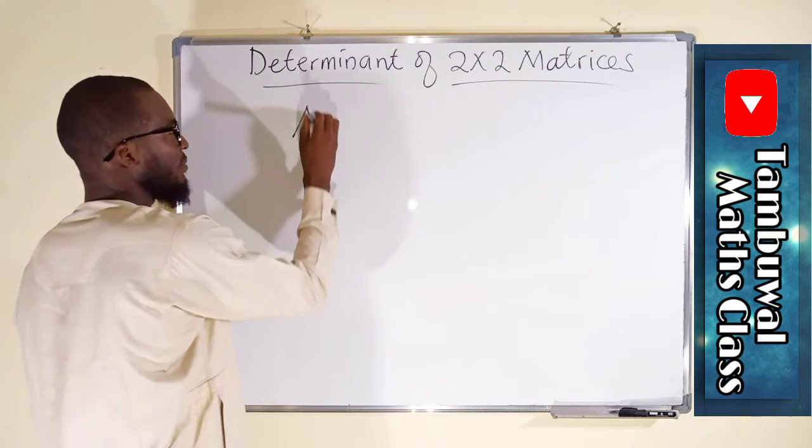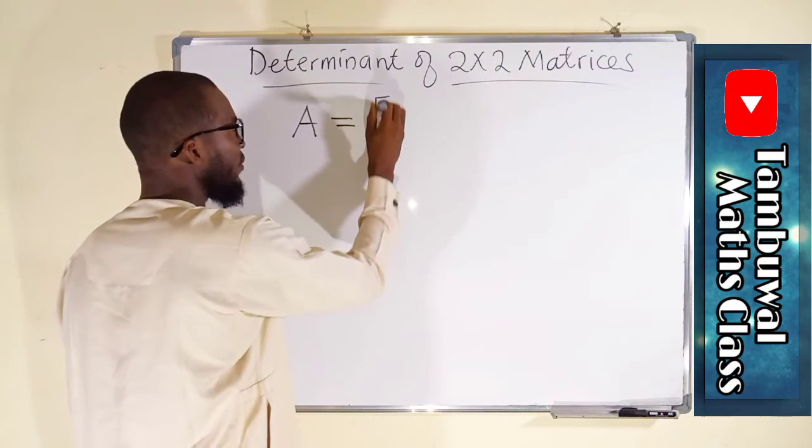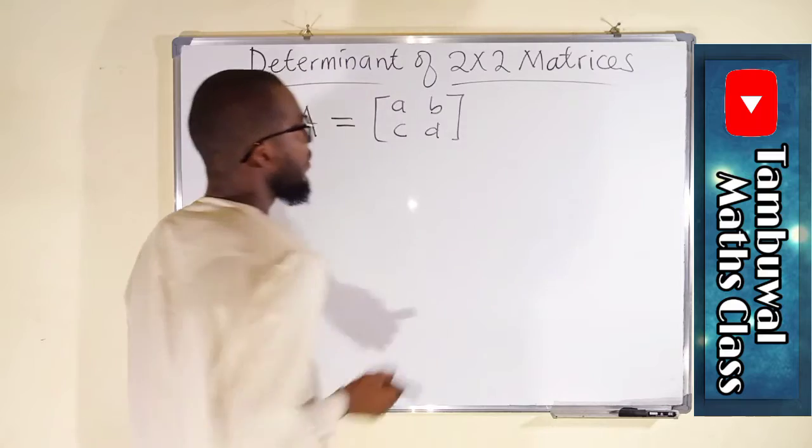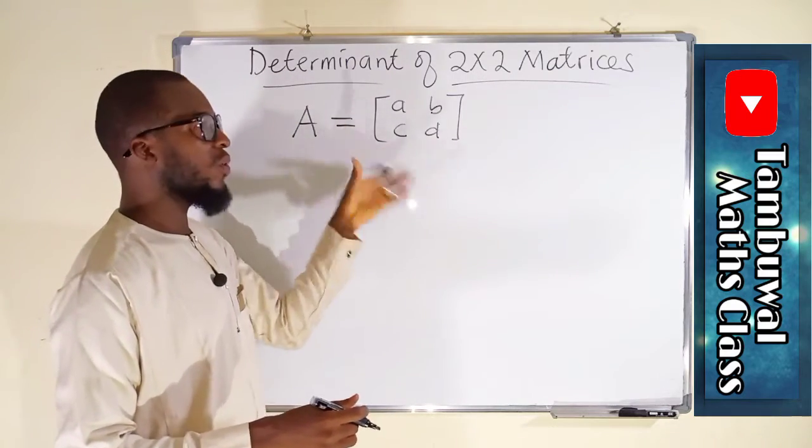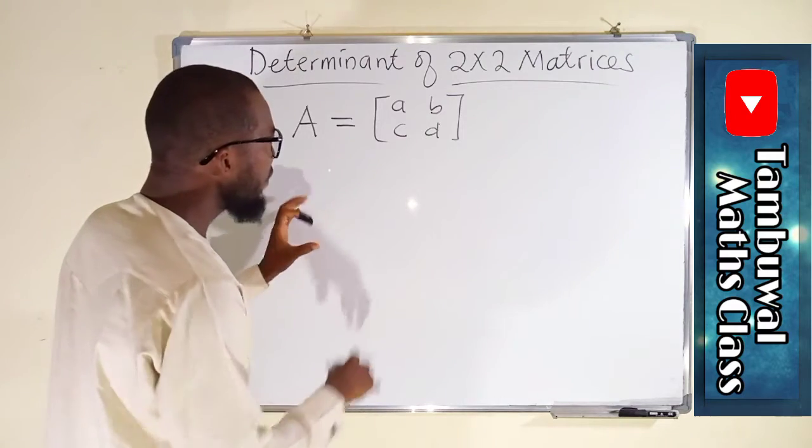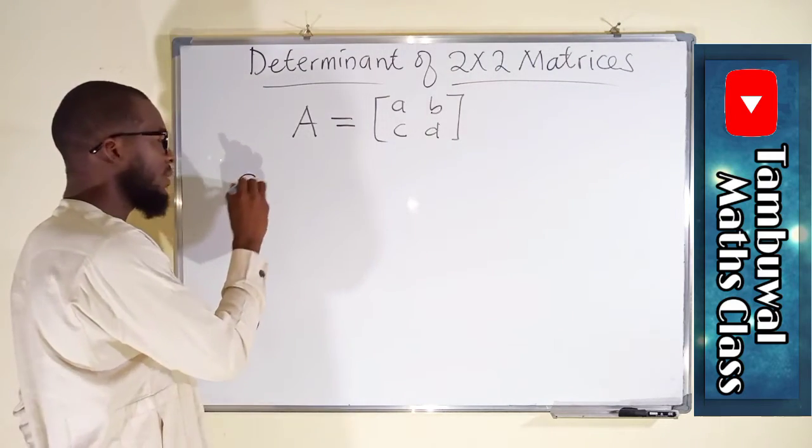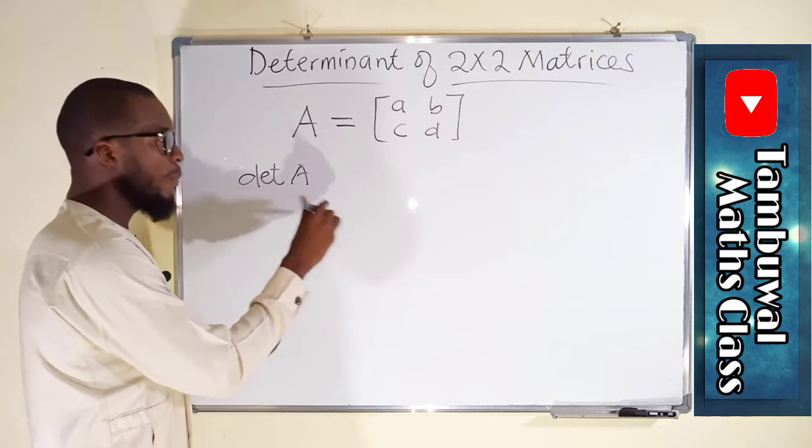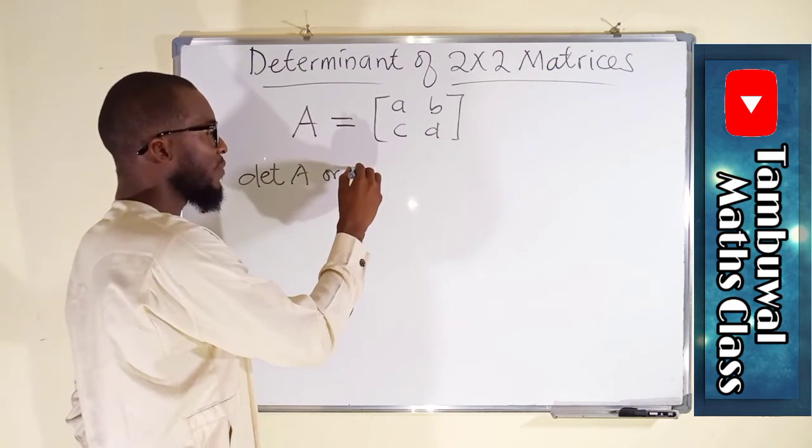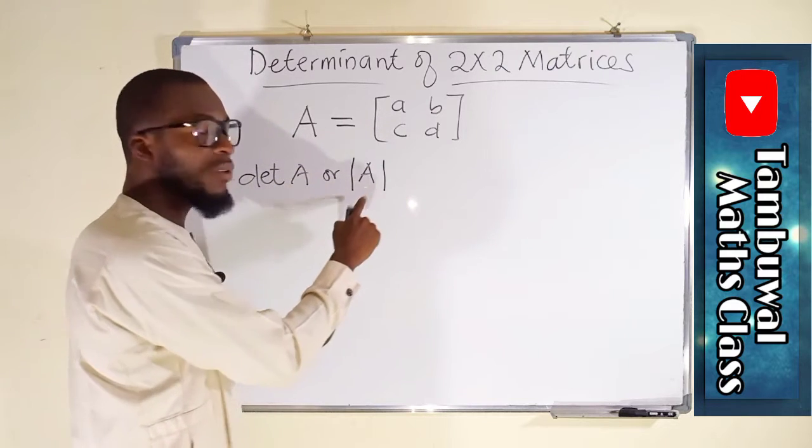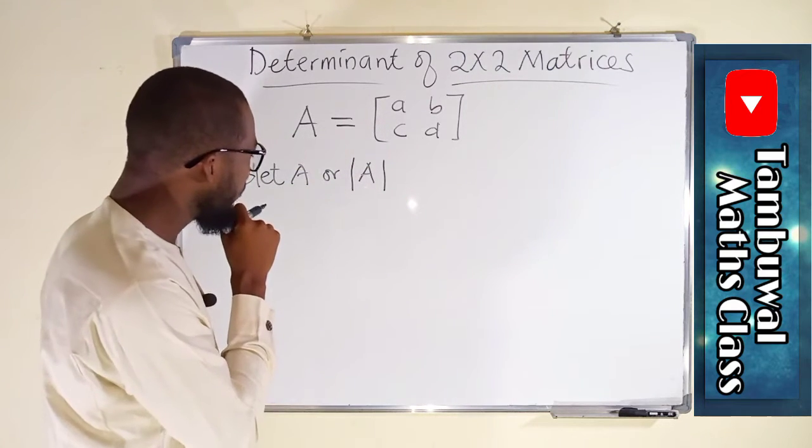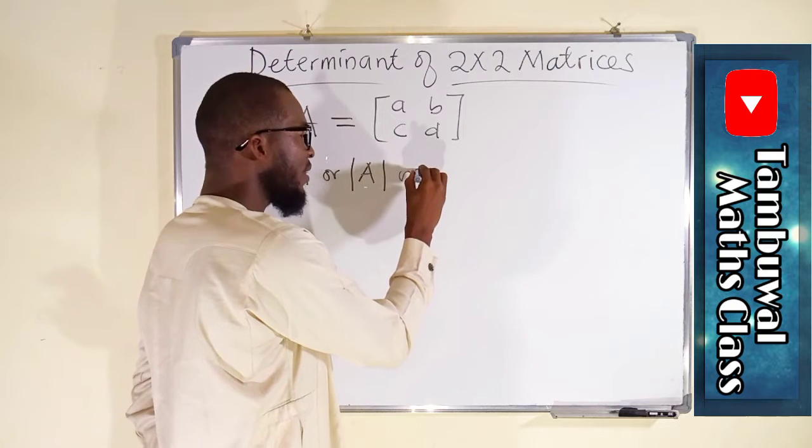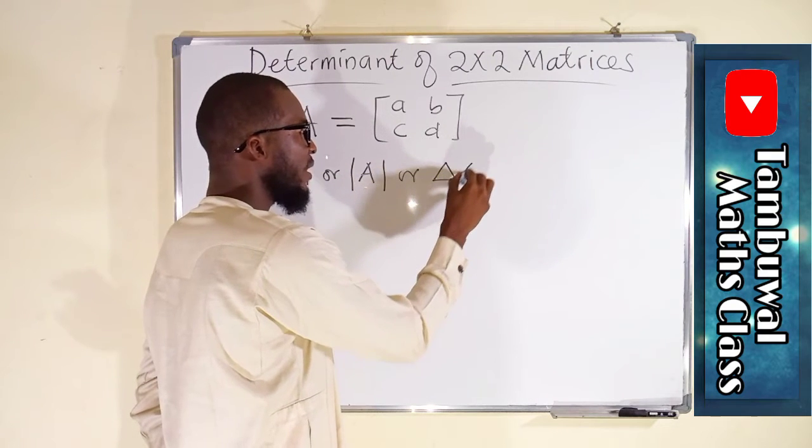So first we have a matrix A that has these entries a, b, c, and d. You know elements of a matrix are enclosed under a bracket, this type of bracket. Determinant of a matrix is denoted by det A, meaning determinant of A, or you can write it in this form. This is not an absolute value, don't confuse it with absolute value, it is just a notation for determinant. You can also write it as delta A in delta notation.